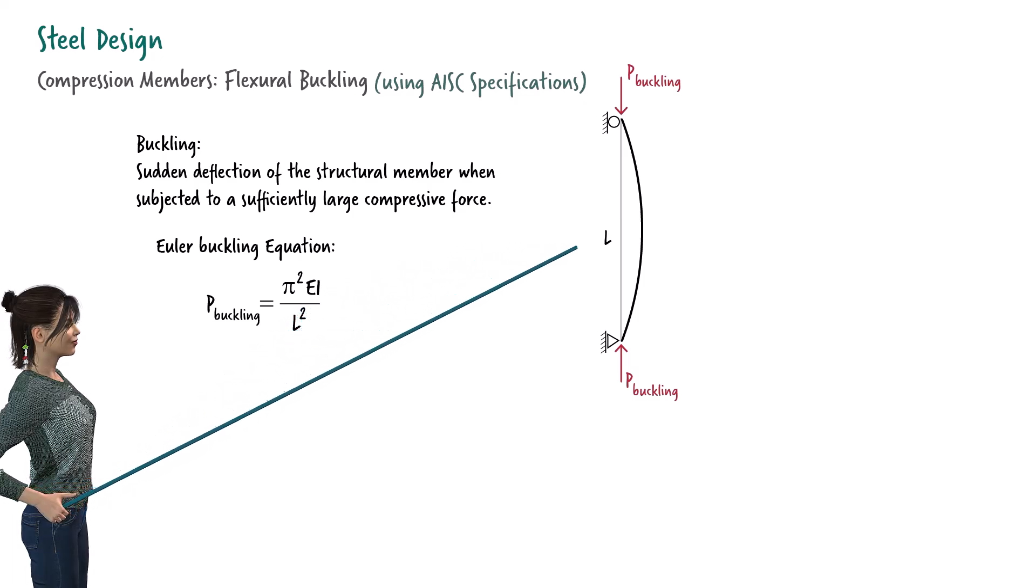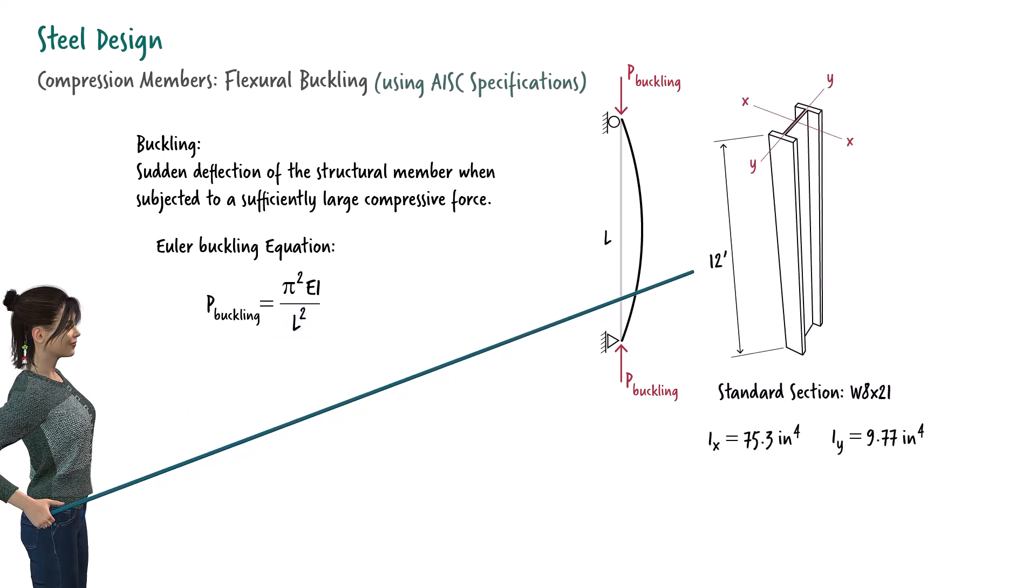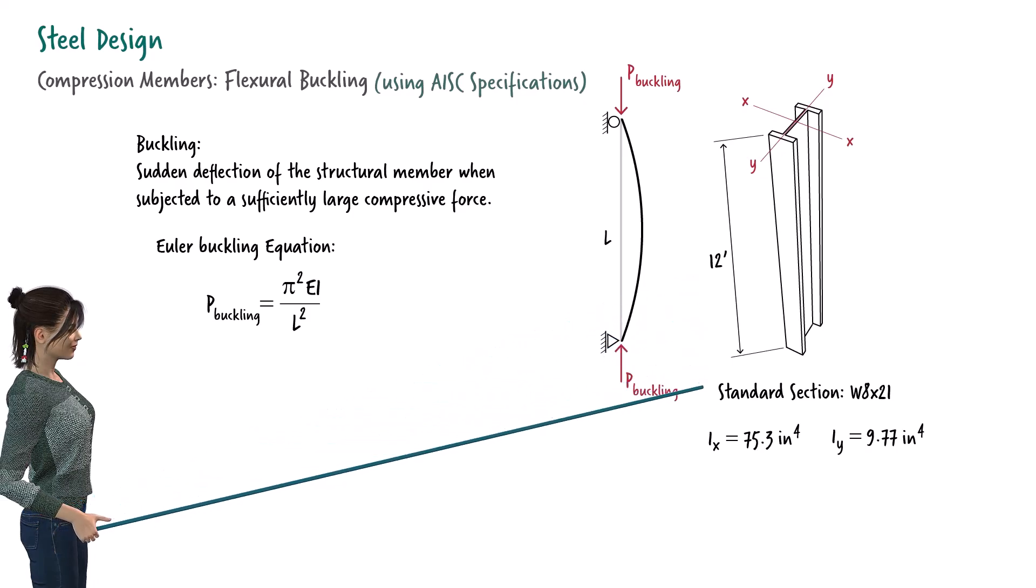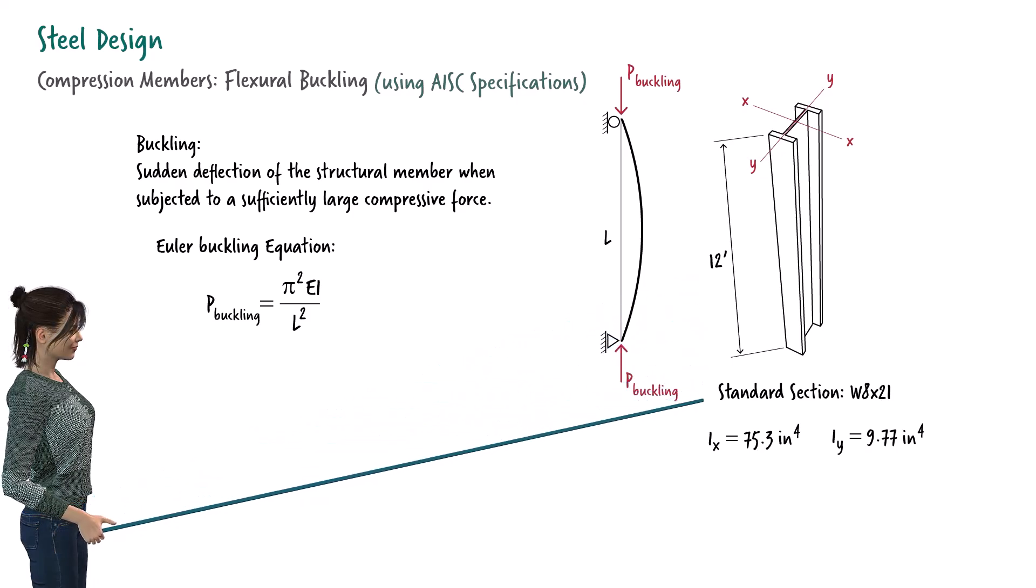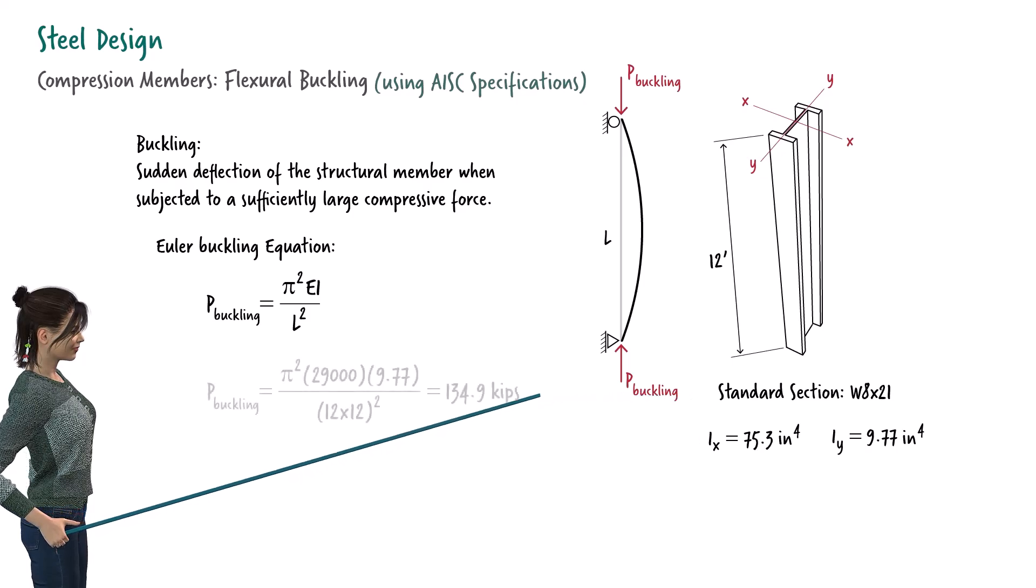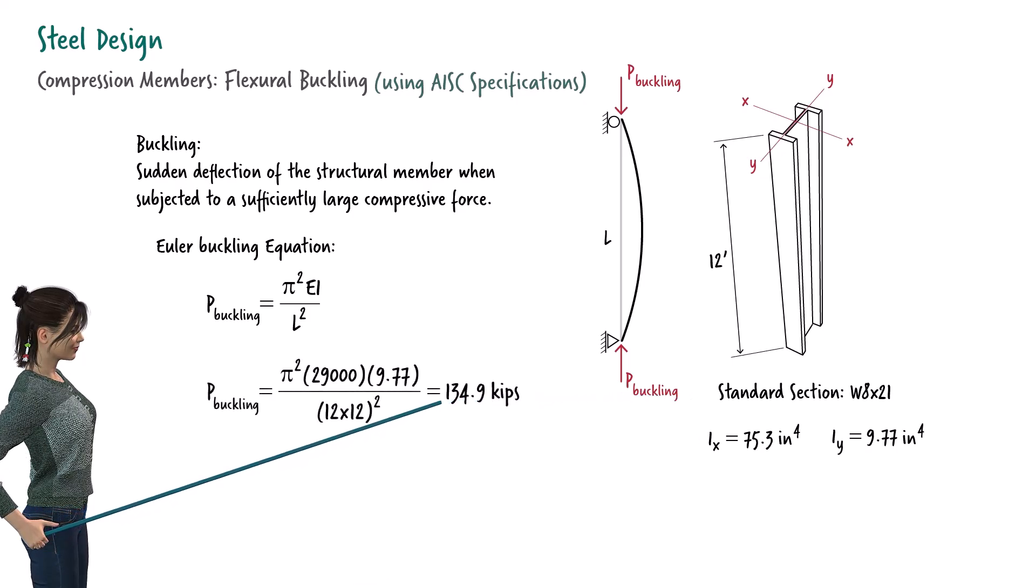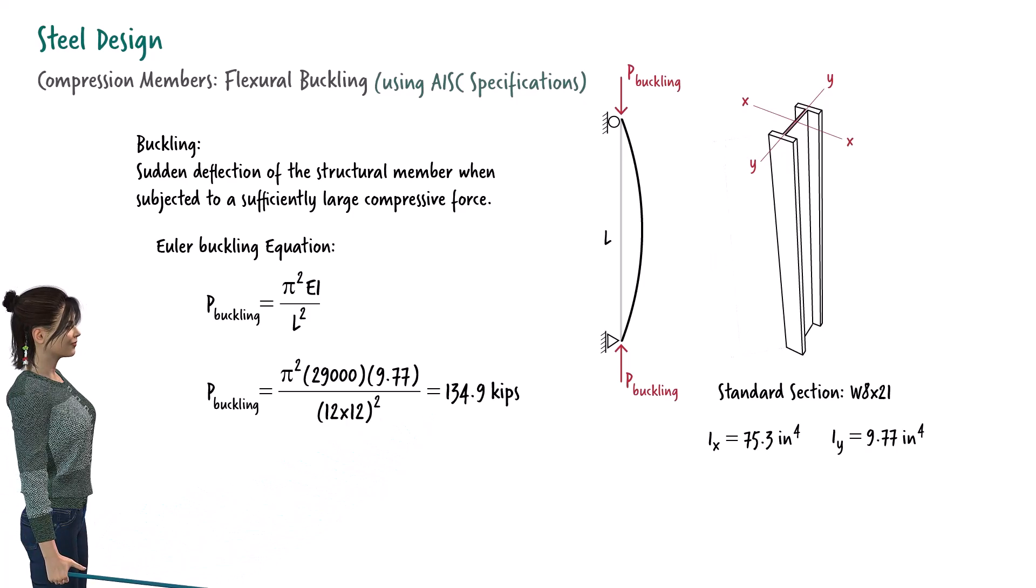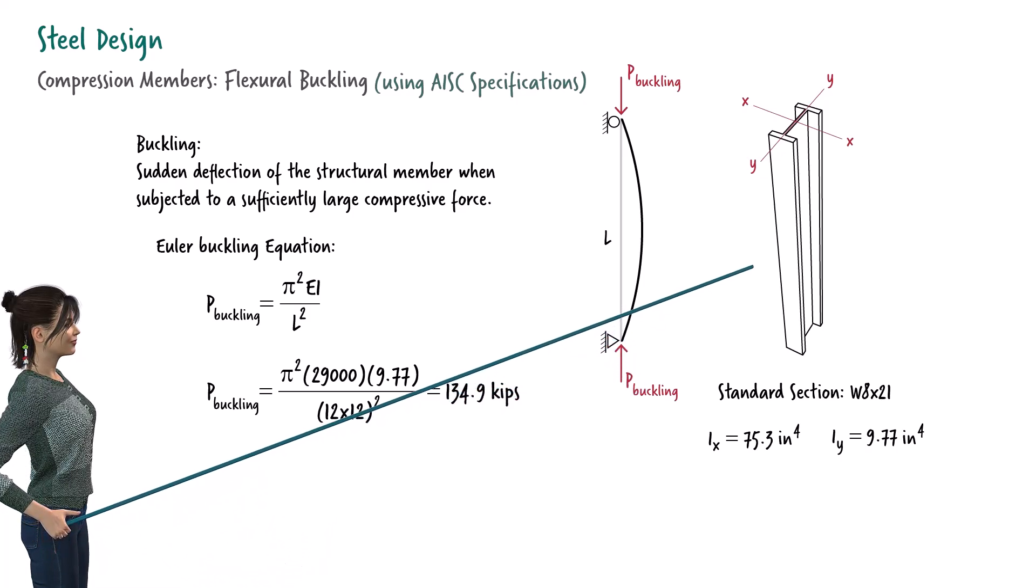So, for a steel member having a length of 12 feet and a standard cross-section of W8 by 21, the buckling load is calculated. When the magnitude of the compressive force reaches 135 kips, theoretically speaking, the member buckles like this.